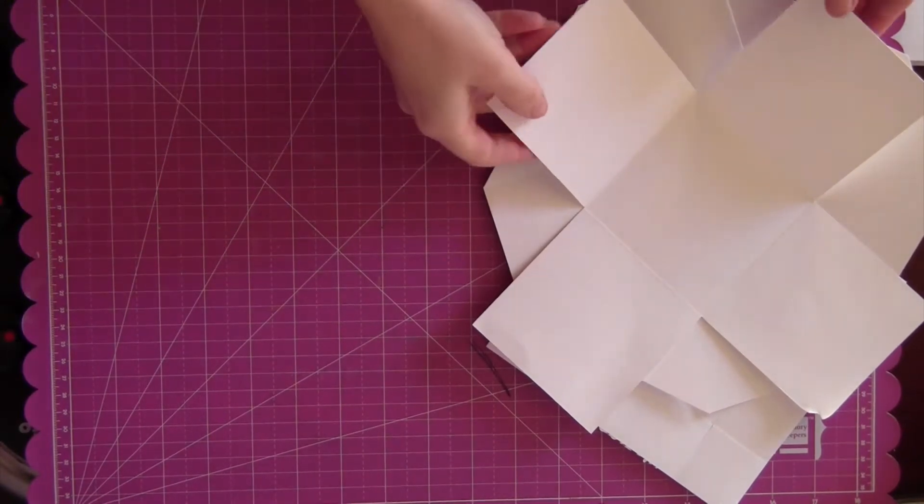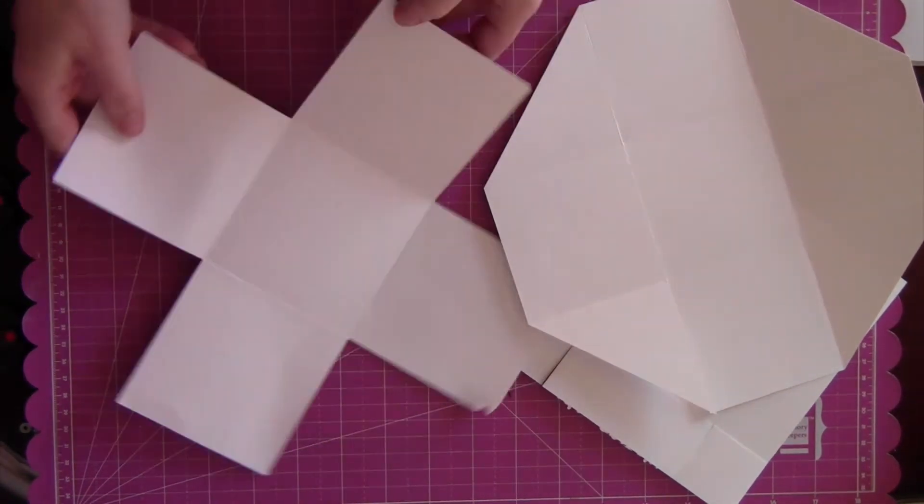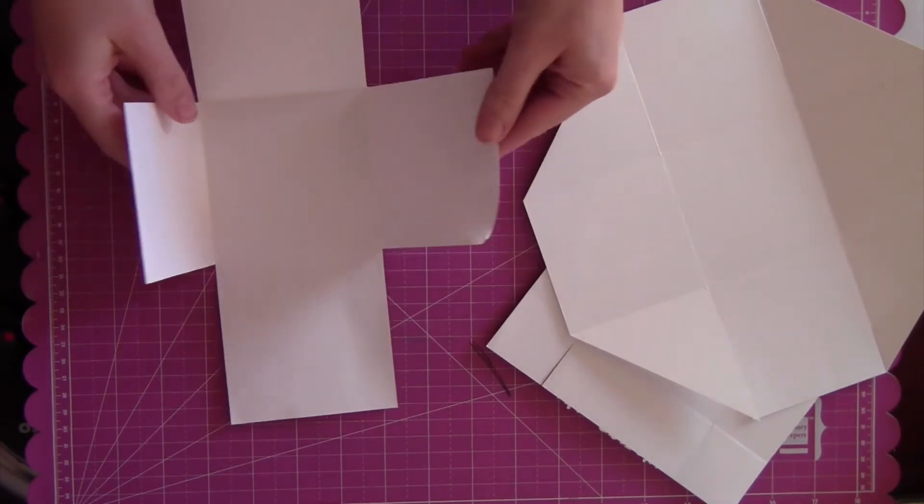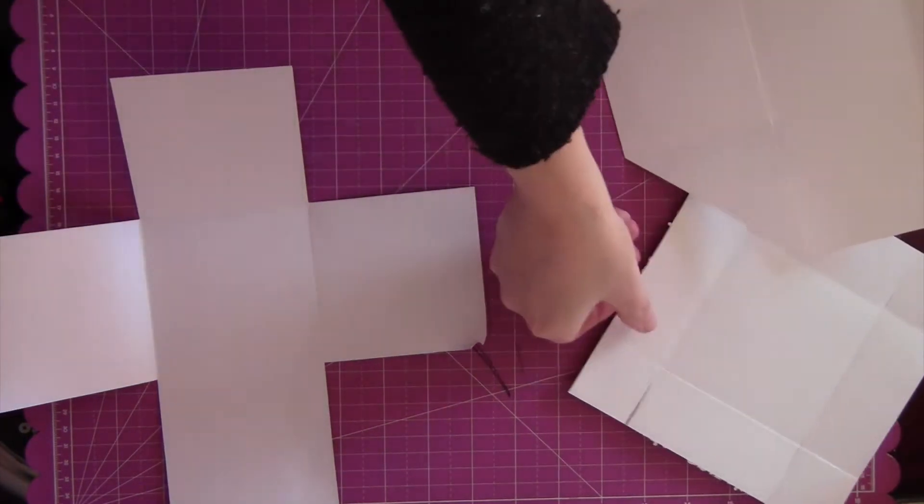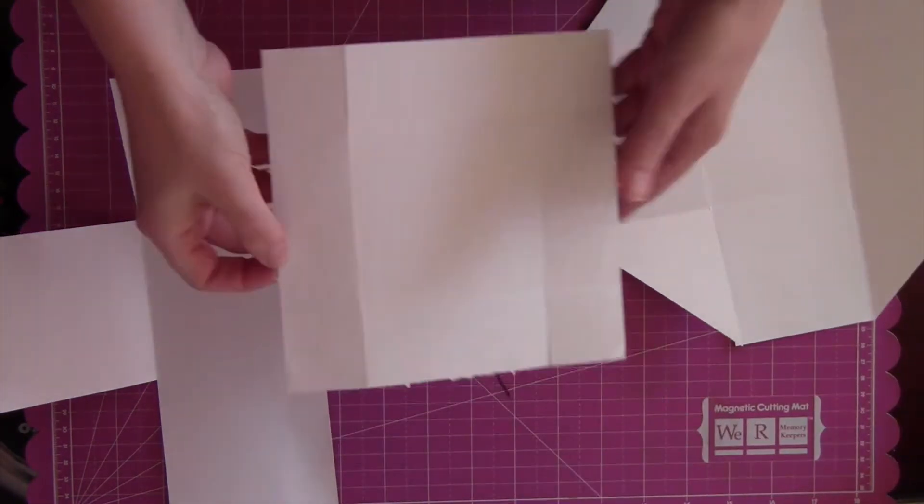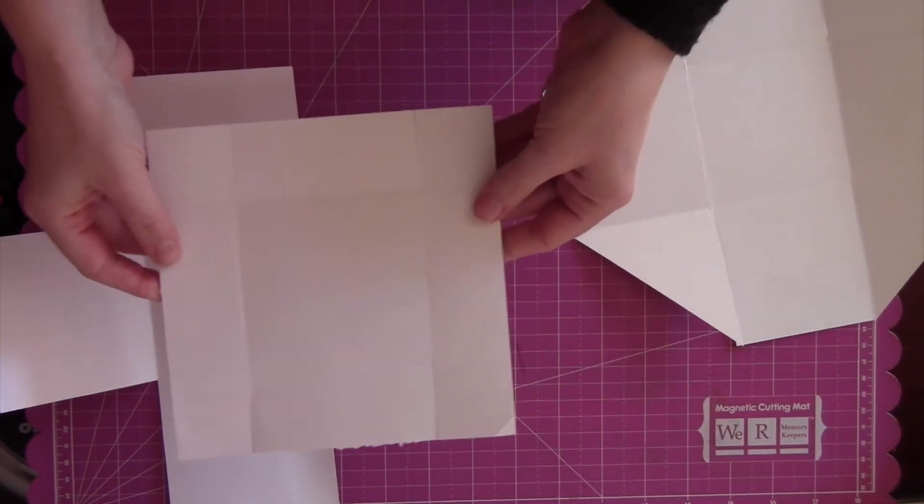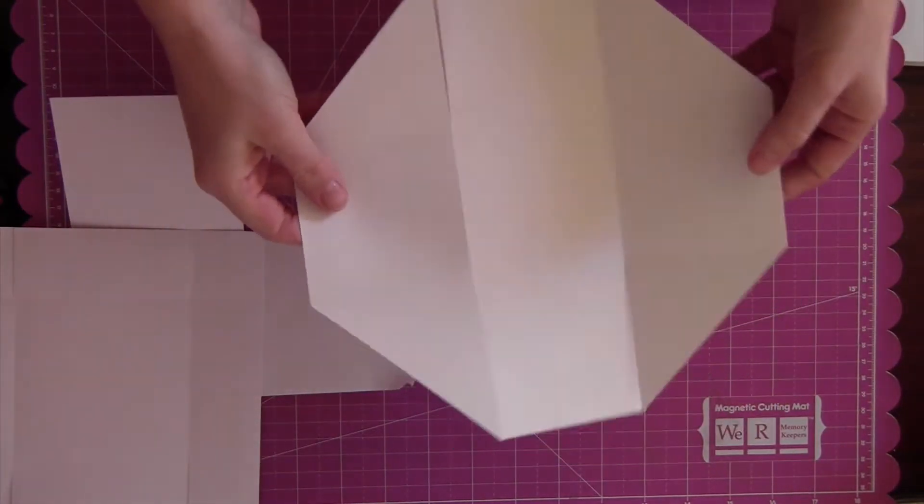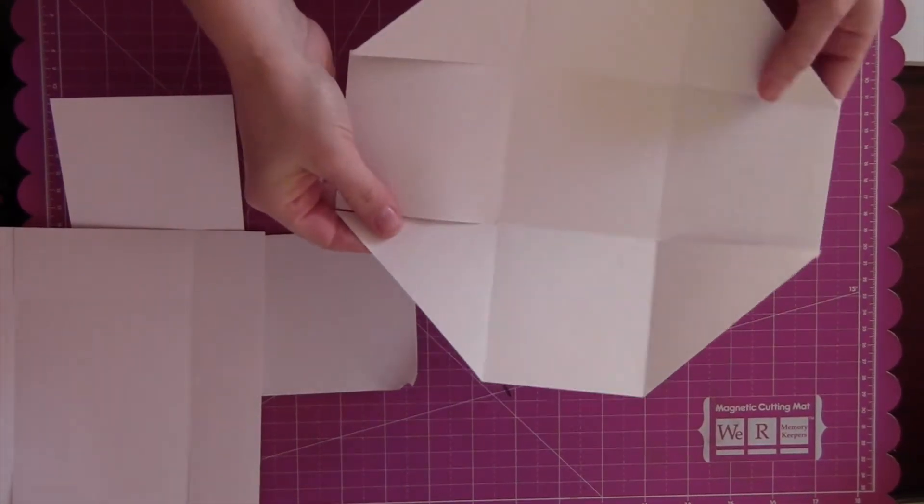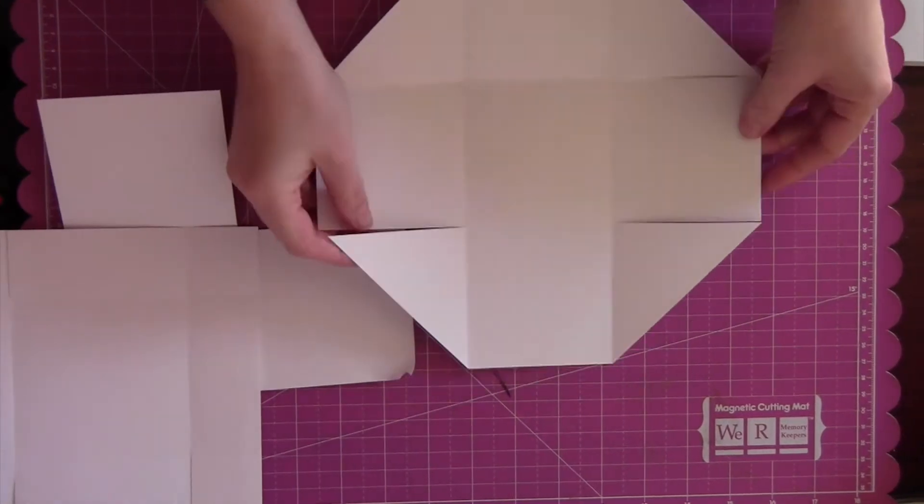First of all, we want to cut and score three pieces of white card following the templates provided in the magazine for this project, or you can download the templates full size from our website, papercraftinspirationsmagazine.co.uk. These three templates will be the outside of the box, the lid, and the inside panel, which is where we saw those secret pockets.